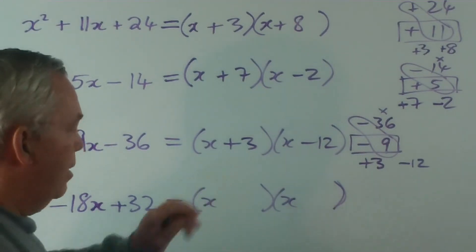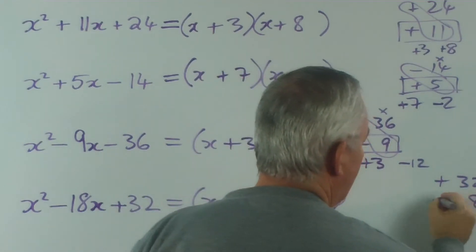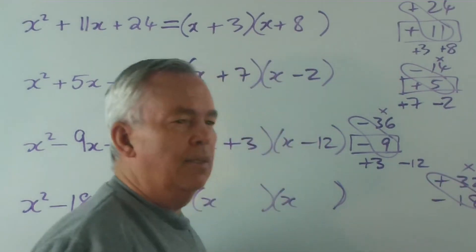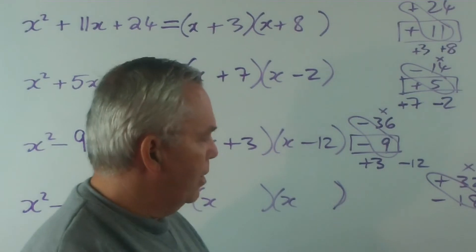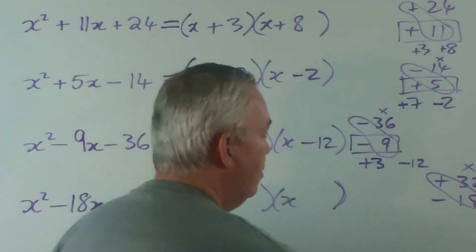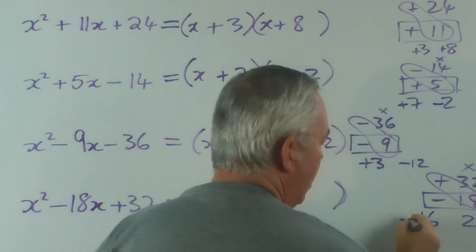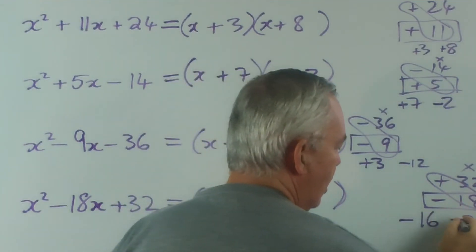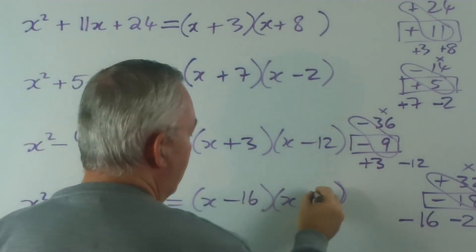This one here, our product plus 32, our sum minus 18. Quite large numbers. But we ask ourselves, what numbers multiply to make 32 that add up to 18? We have to have minus 16, that's the big number, has to be the same sign. And to get from minus 16 to minus 18, we have to subtract 2 as well. Minus 16 minus 2 is minus 18. How do you like that?